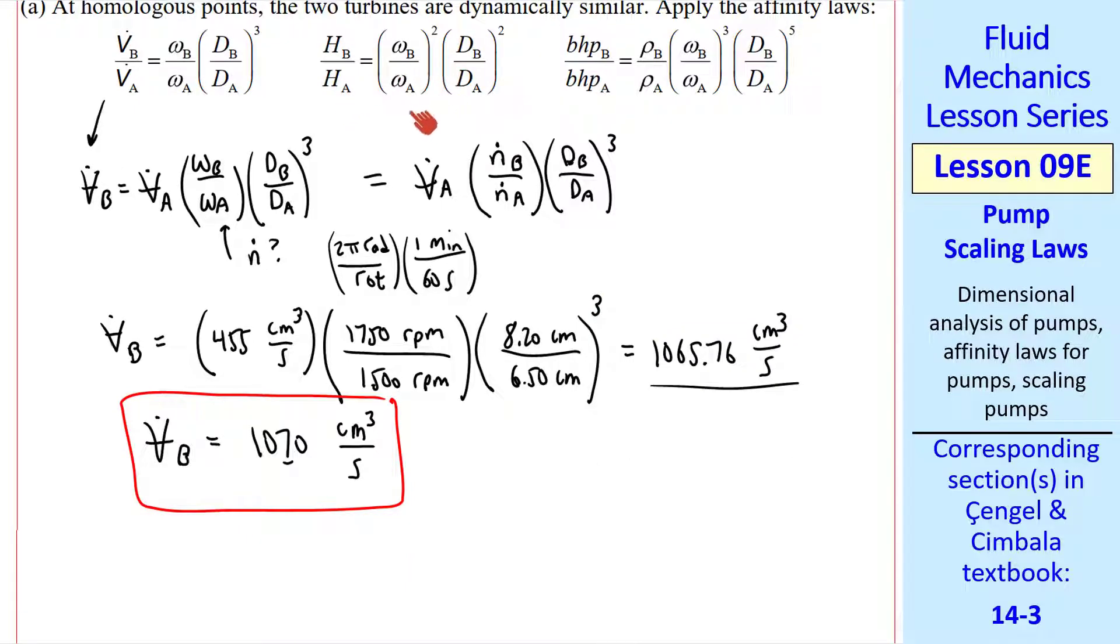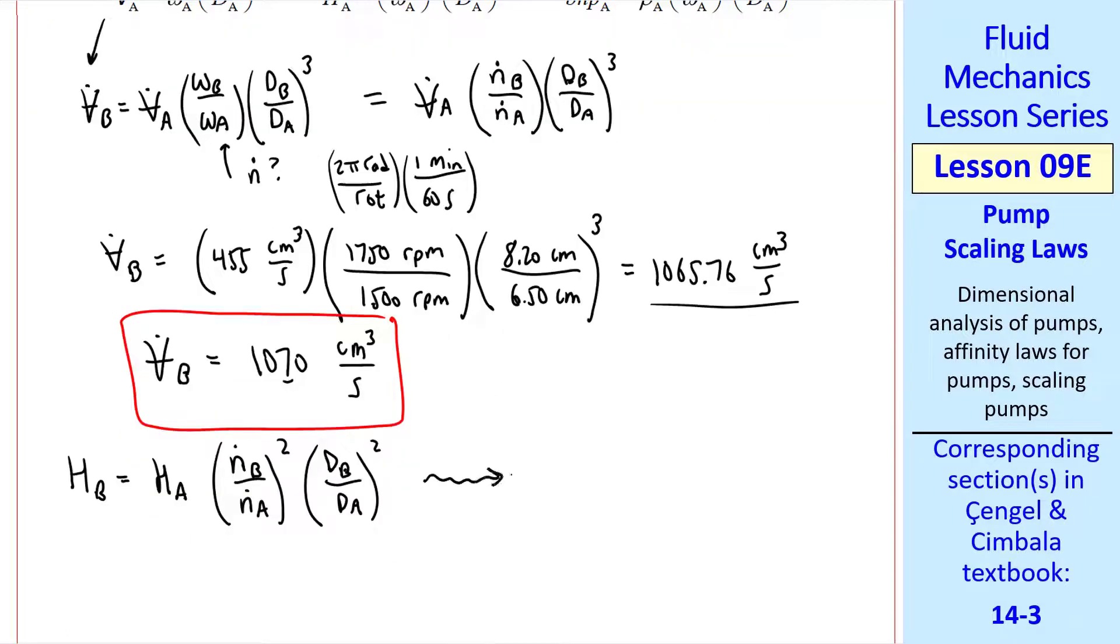Similarly, using the second affinity law, we write HB equal HA, N dot B over N dot A squared, times DB over DA squared. I'll spare you all the details. When you plug in the numbers, we get HB equal 3.12 meters, which is also more than twice as much as the net head of pump A.